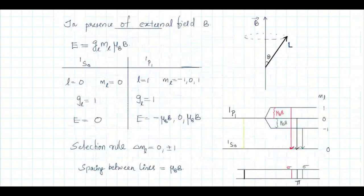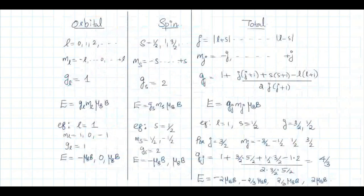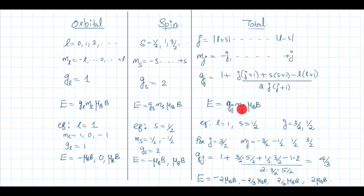The interaction energy is g_L m_l mu_B B for only orbital motion, g_S m_S mu_B B for only spin motion, and g_J m_J mu_B B when L and S couple to total angular momentum J. Using these relations, you can calculate the various positions of spectral lines in the presence of a magnetic field. That is all about the effect of external magnetic field on the spectral lines of atoms.